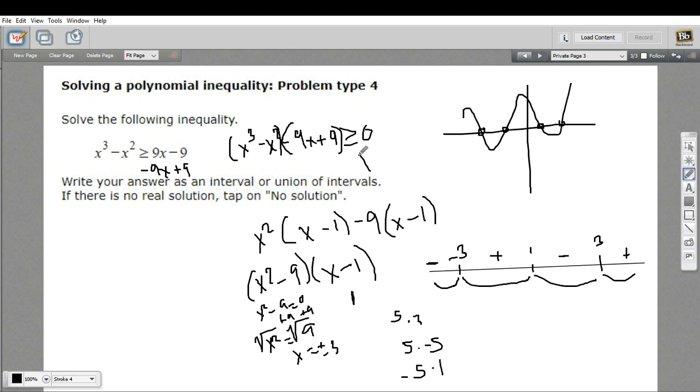Now, remember, we're looking for where this function is greater than or equal to 0. So we're looking at this region and this region. So we're going to start at negative 3. And I'm going to include negative 3 with the square bracket because it's greater than or equal to. So the 3 is included. That's at negative 3.